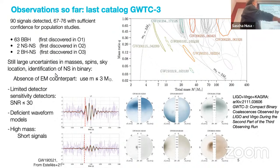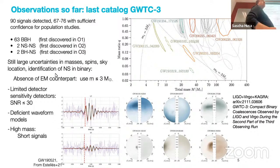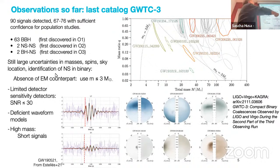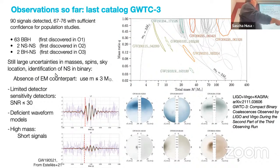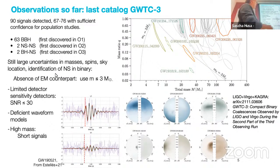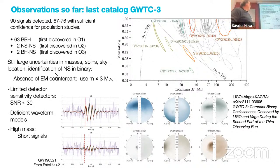This plot from the GWTC-3 paper shows mass ratio and total mass with uncertainties for all events, some interesting ones highlighted in color. The uncertainties in masses are still quite large — some events more than others. In all quantities — masses, spin, sky location — uncertainties are still relatively large. There are plots of spin uncertainties showing inclination and magnitude of spin vectors; even in the six cases where spins can be measured more accurately, the error bars are still quite large.